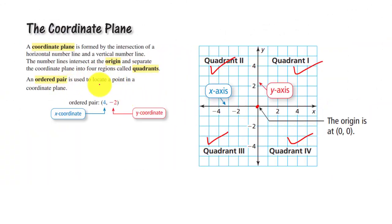An ordered pair is used to locate a point in a coordinate plane. Suppose ordered pair is 4 and negative 2. It means 4 represents X coordinate and negative 2 represents Y coordinate. The horizontal number line is called X axis.